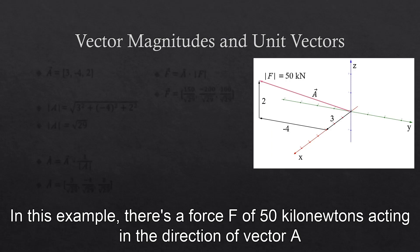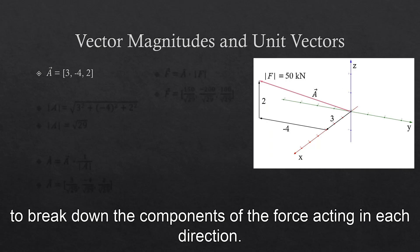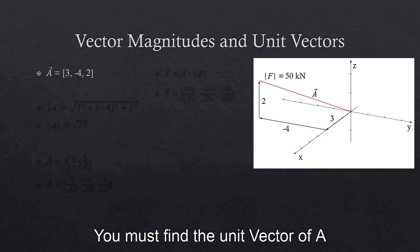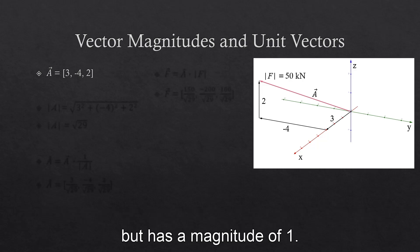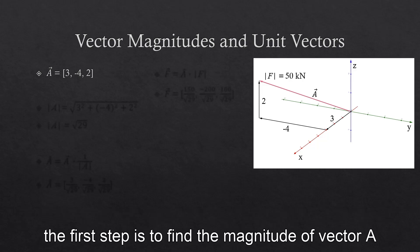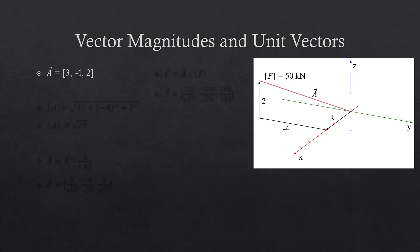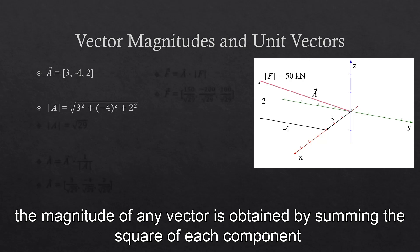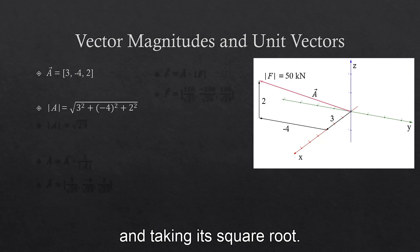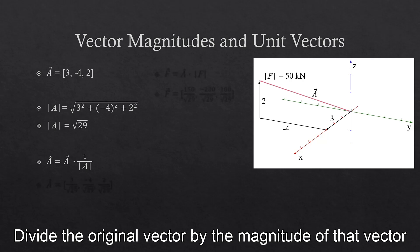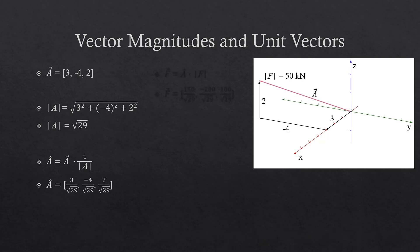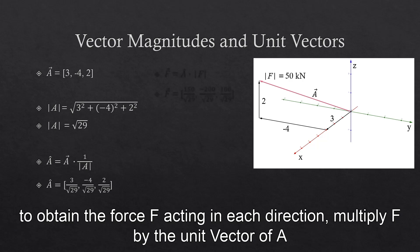In this example, there is a force F of 50 kN acting in the direction of vector A. To break down the components of the force acting in each direction, you must find the unit vector of A. A unit vector is a vector acting in the same direction as the original vector but has a magnitude of 1. The first step is to find the magnitude of vector A. The magnitude of any vector is obtained by summing the square of each component and taking its square root. Divide the original vector by its magnitude and you will have the unit vector. To obtain force F acting in each direction, multiply F by the unit vector of A.